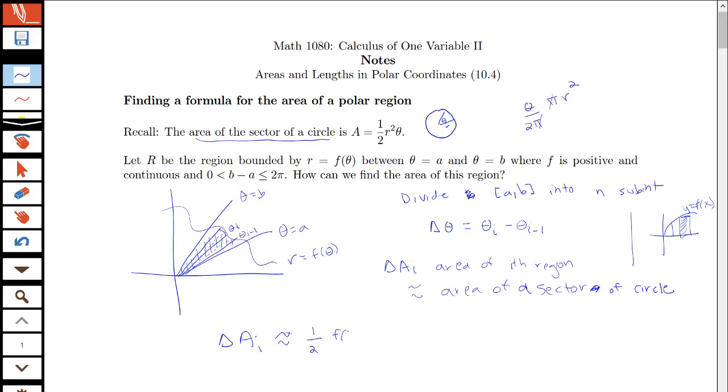So I'm going to have f of theta i star. Remember we used to use x_i star to represent a point somewhere in the i-th subinterval here. Now I'm going to use this theta i star just as my notation to say this is some angle between theta i and theta i minus 1. And then the central angle that I have is my delta theta.